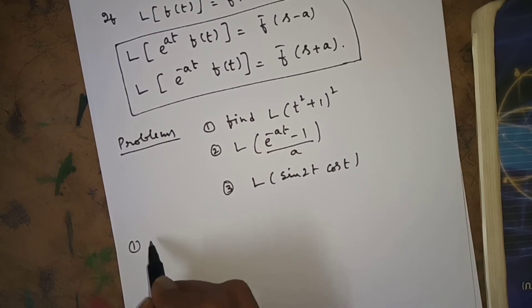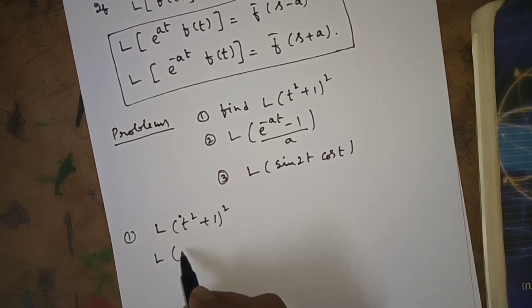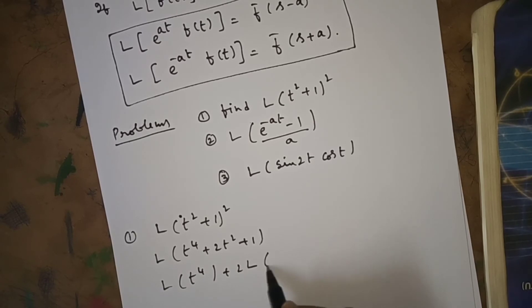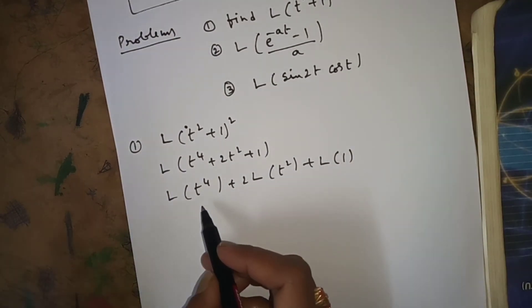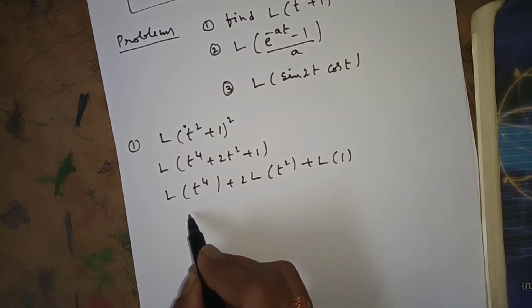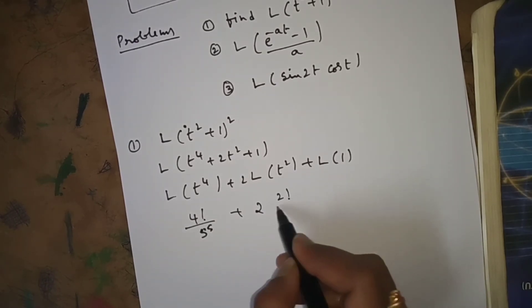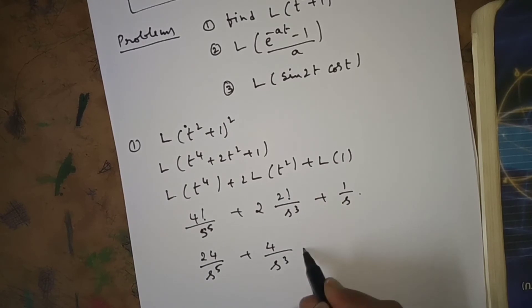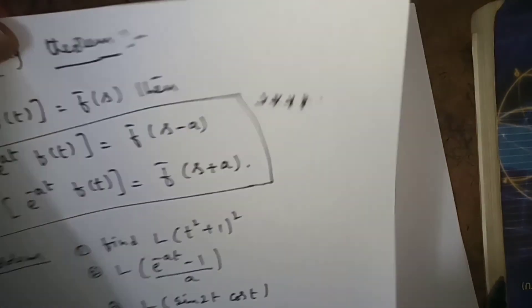Using all basic formulas and the first shifting theorem, we will do a few problems. Problem 1: Find L{(t²+1)²}. Expanding: L{t⁴ + 2t² + 1}. Splitting: L{t⁴} + 2·L{t²} + L{1} = 4!/s⁵ + 2·(2!/s³) + 1/s = 24/s⁵ + 4/s³ + 1/s.